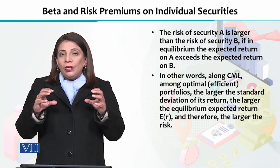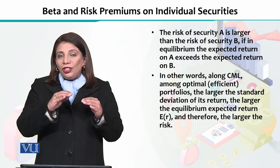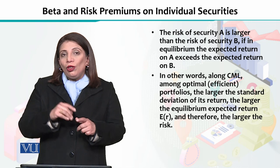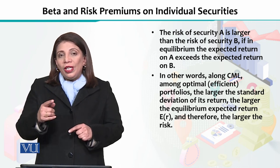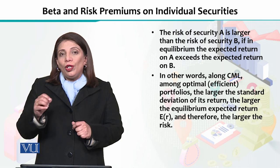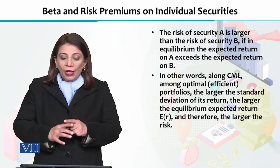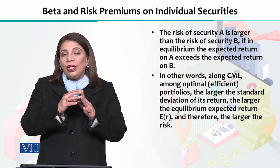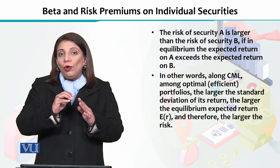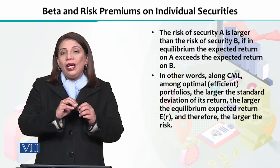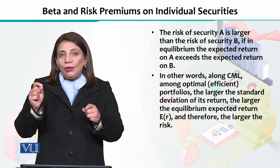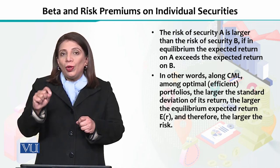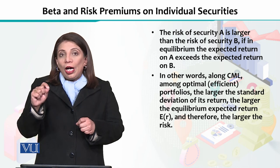Now, if we look at the overall investment decision — in which portfolio we have to invest — we have discussed that we take the Capital Market Line (CML), the point of tangency, and the efficient frontier. At that particular point, your expected return is maximum for a given level of risk. This is why we call that particular allocation the optimal point.